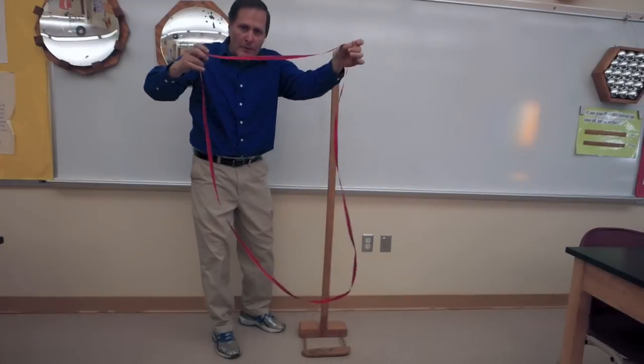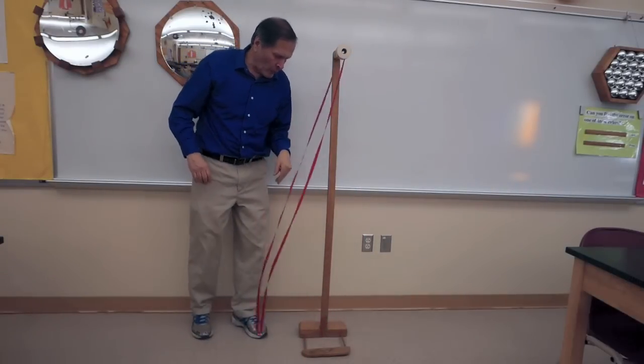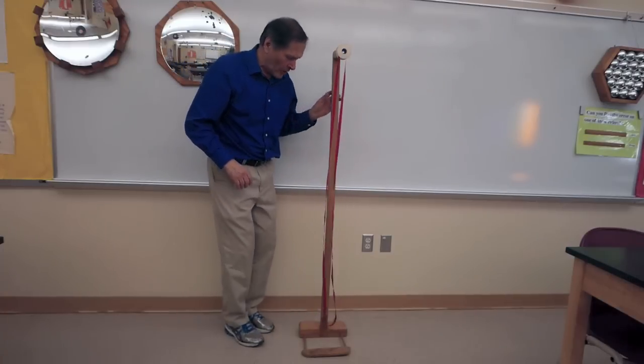Now, here's my continuous loop of ribbon. When I put it on this wheel, I can move it back and forth, and it hangs very limp. There's not much to it. But when I turn this on,